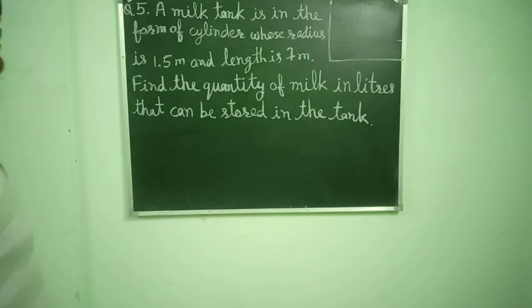In this question, a milk tank is in the form of a cylinder whose radius is 1.5 meters and length is 7 meters. Find the quantity of milk in liters that can be stored in the tank.